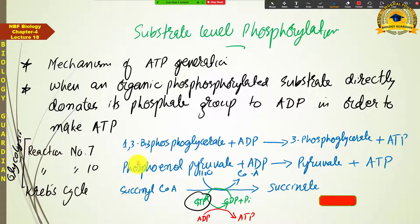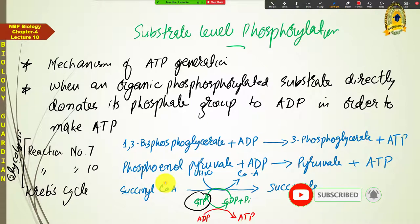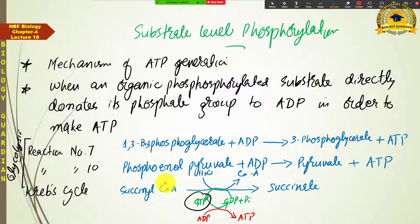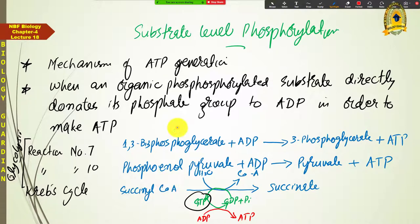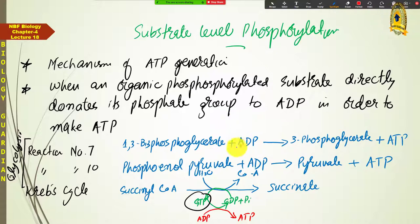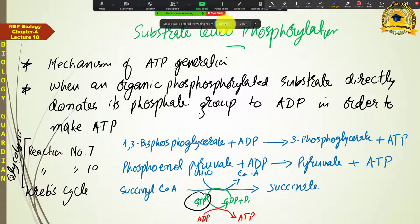So through the aerobic respiratory pathway, ATPs are generated by substrate level phosphorylation at these specific points. Now that we have discussed both mechanisms of ATP generation, let us calculate the total and net gain of ATP during the entire respiratory metabolism.